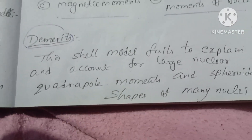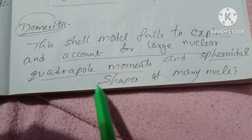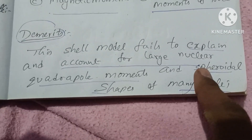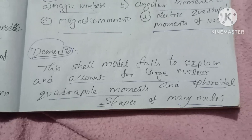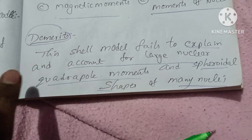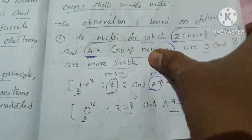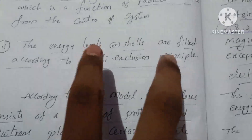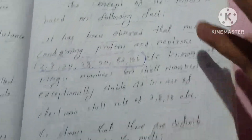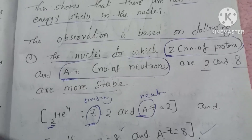A demerit of the shell model is that it fails to account for the large nuclear quadrupole moments and non-spherical shapes of many nuclei. The shell model cannot fully explain why some nuclei have a non-spherical or deformed shape with a large quadrupole moment.